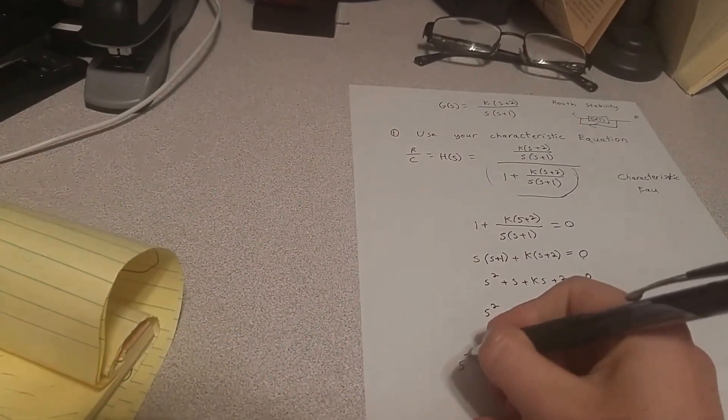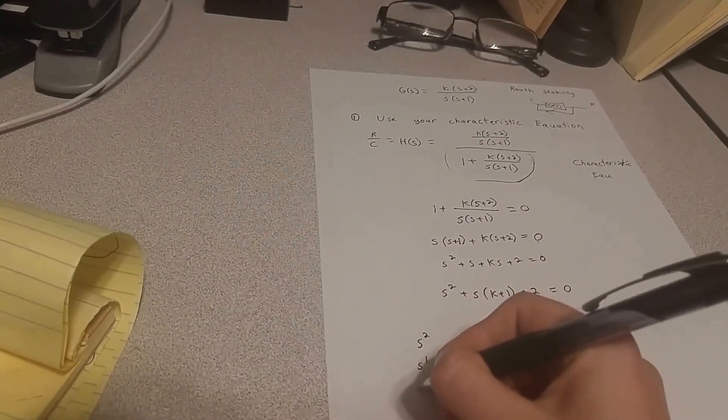So now to make my chart: draw the s squared, s to the 1, and s to the 0.